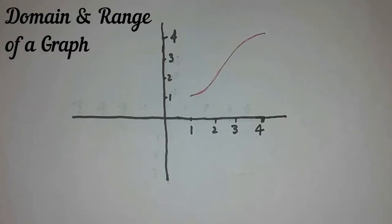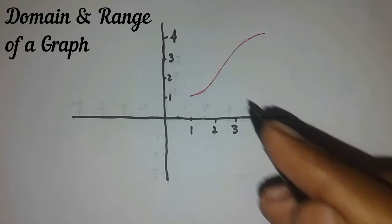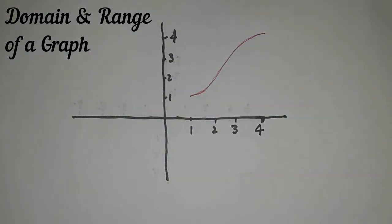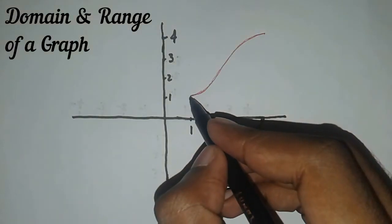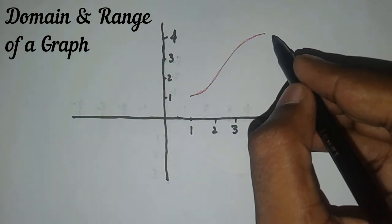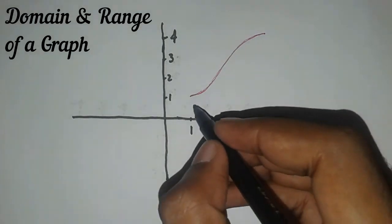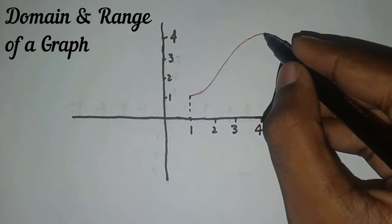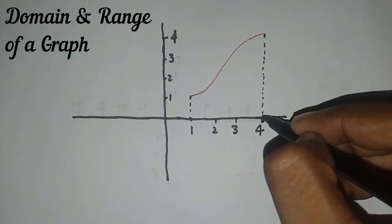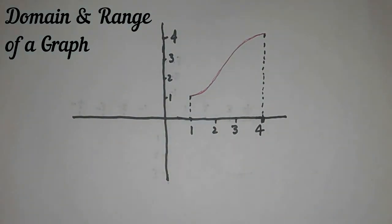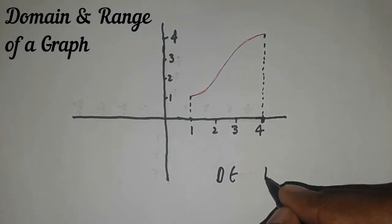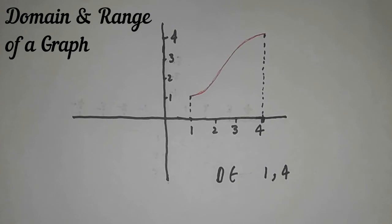How to find the domain and the range of a given graph such as this graph. For the domain, we see the graph from leftmost to rightmost points. The leftmost point is one and the rightmost point is four, so its domain will be [1, 4].